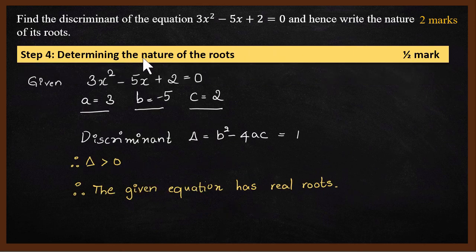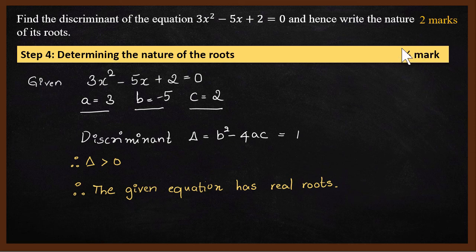The next step is determining the nature of the roots. The value of the discriminant tells us what is the nature of the roots. In this case, the discriminant value is 1, which is greater than 0. Since it's greater than zero, the given equation has real roots.